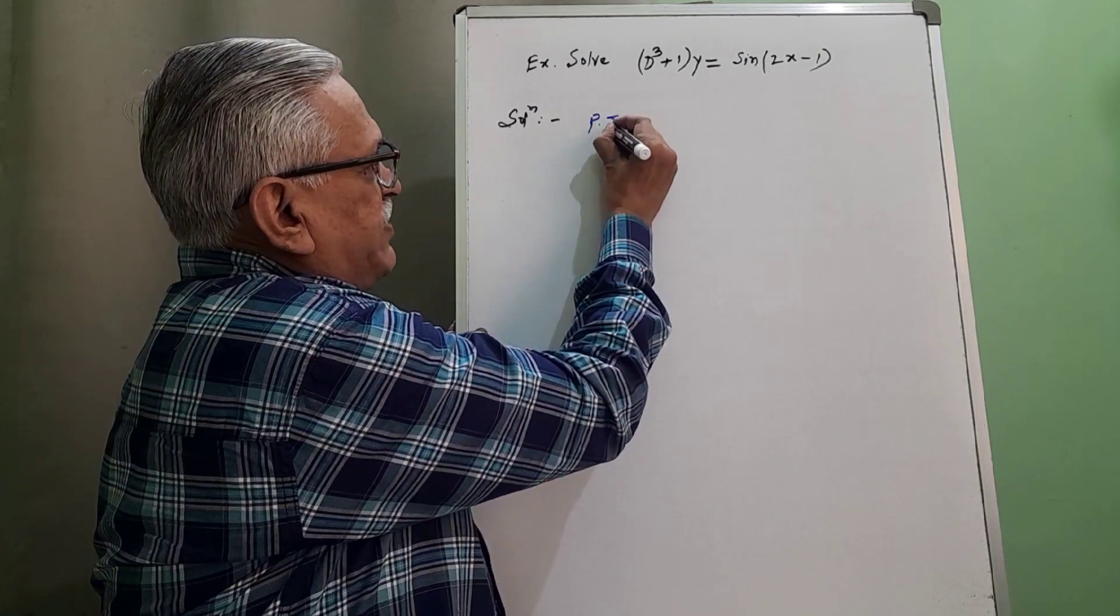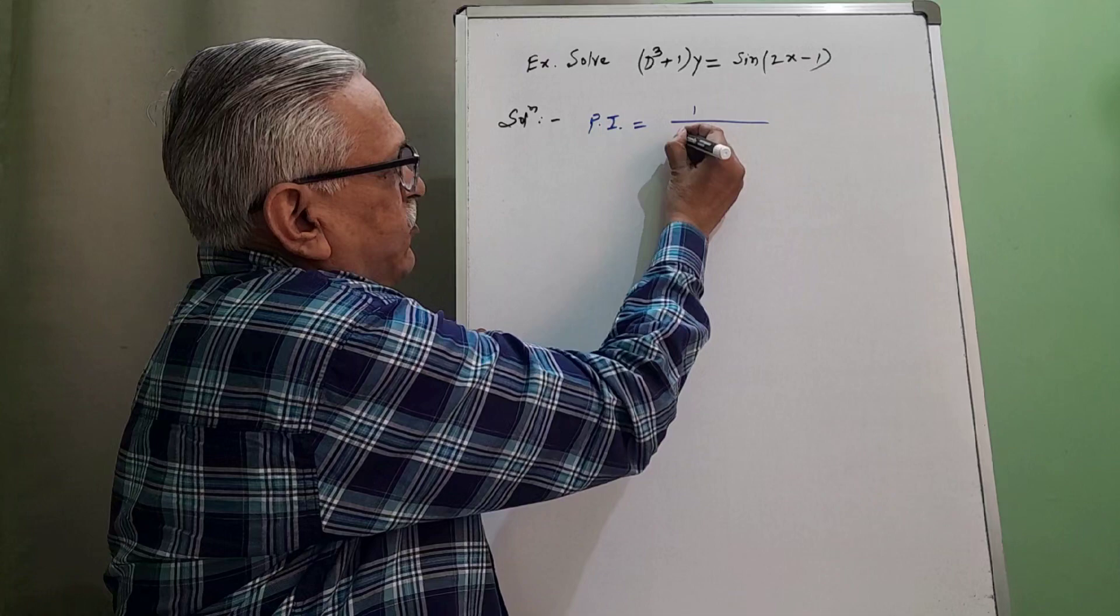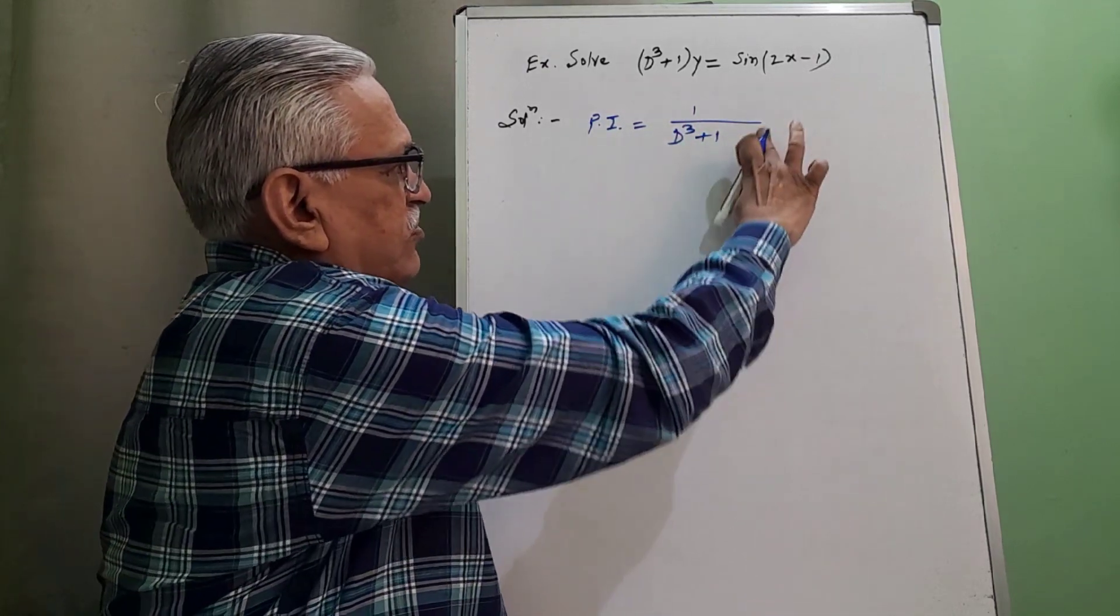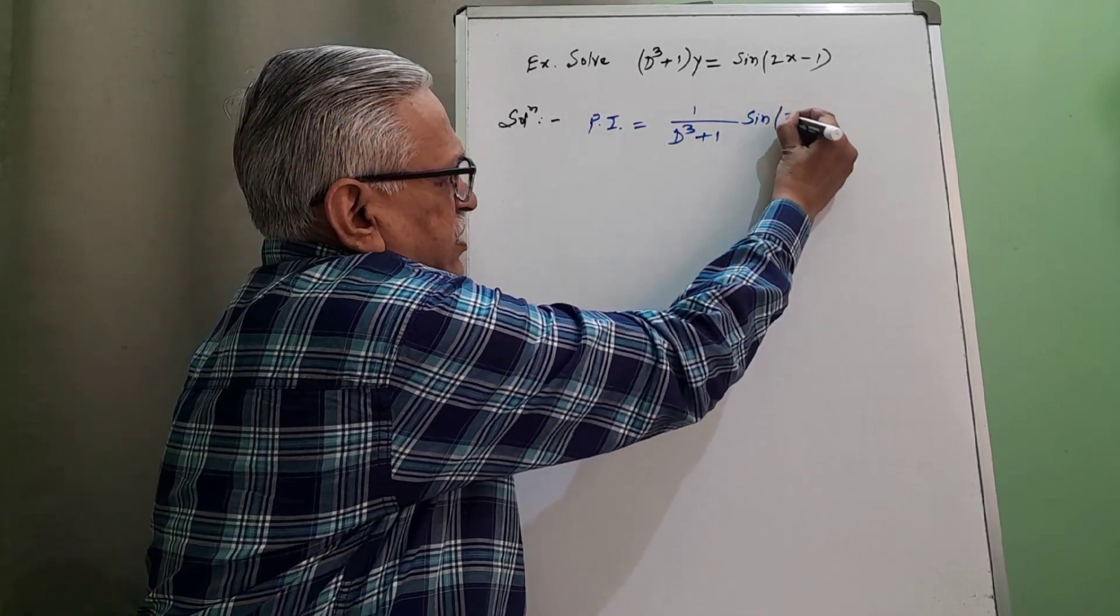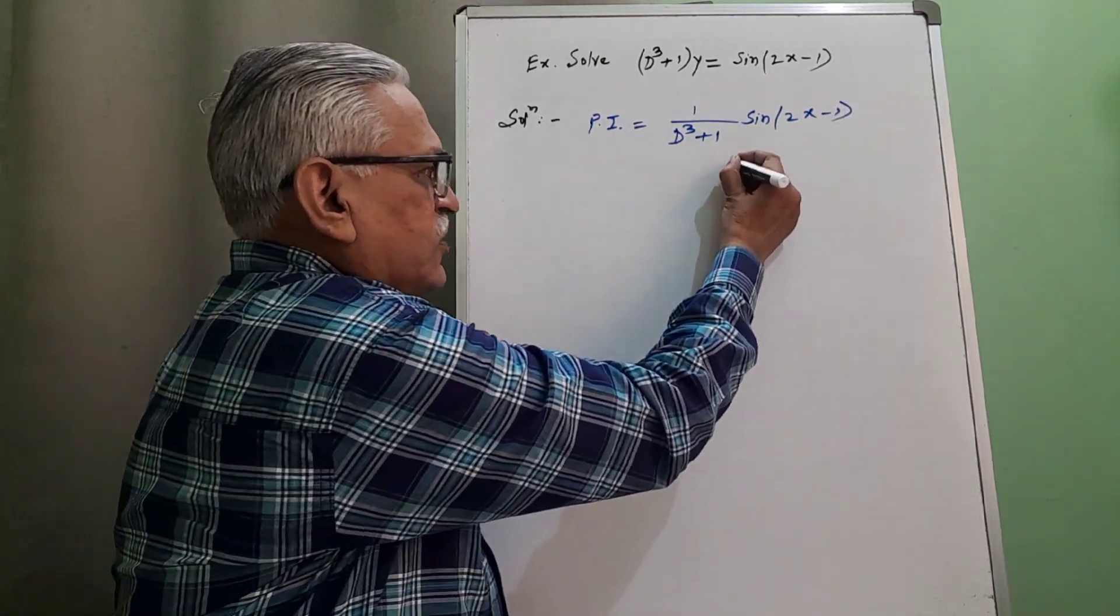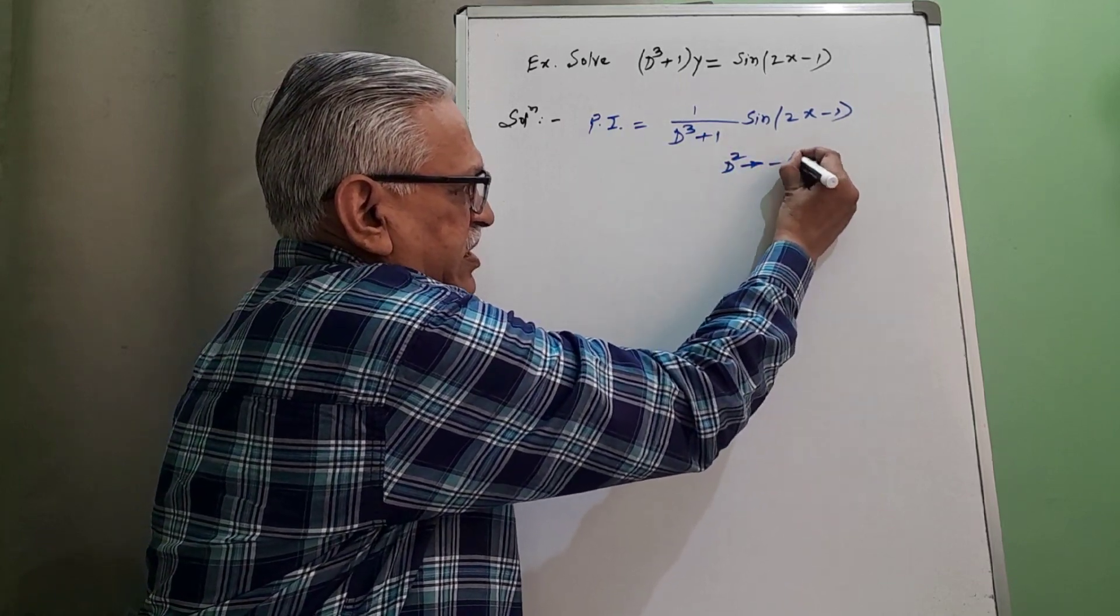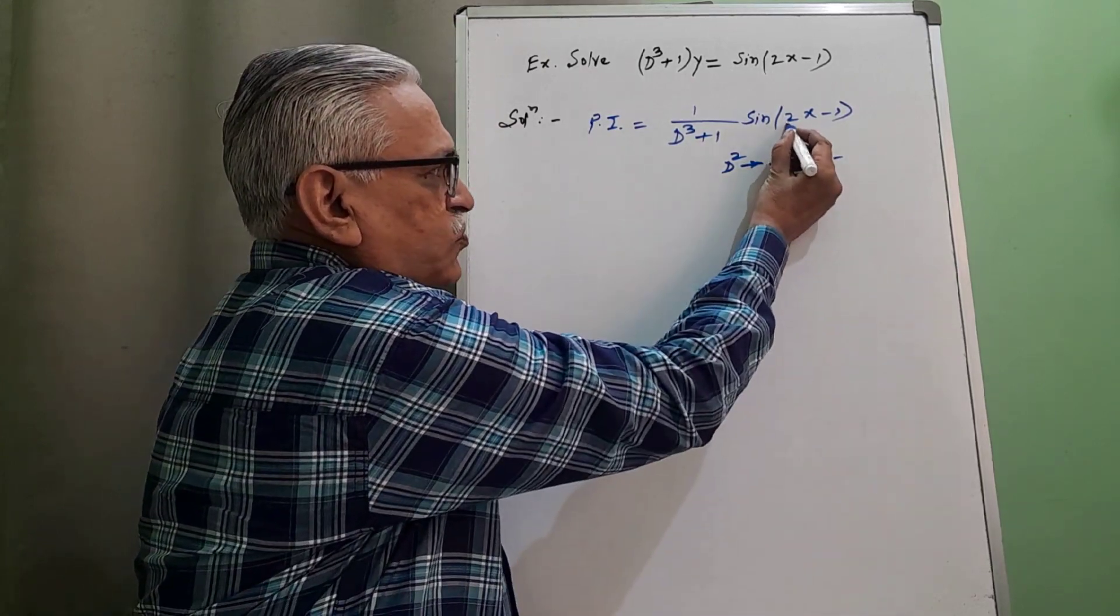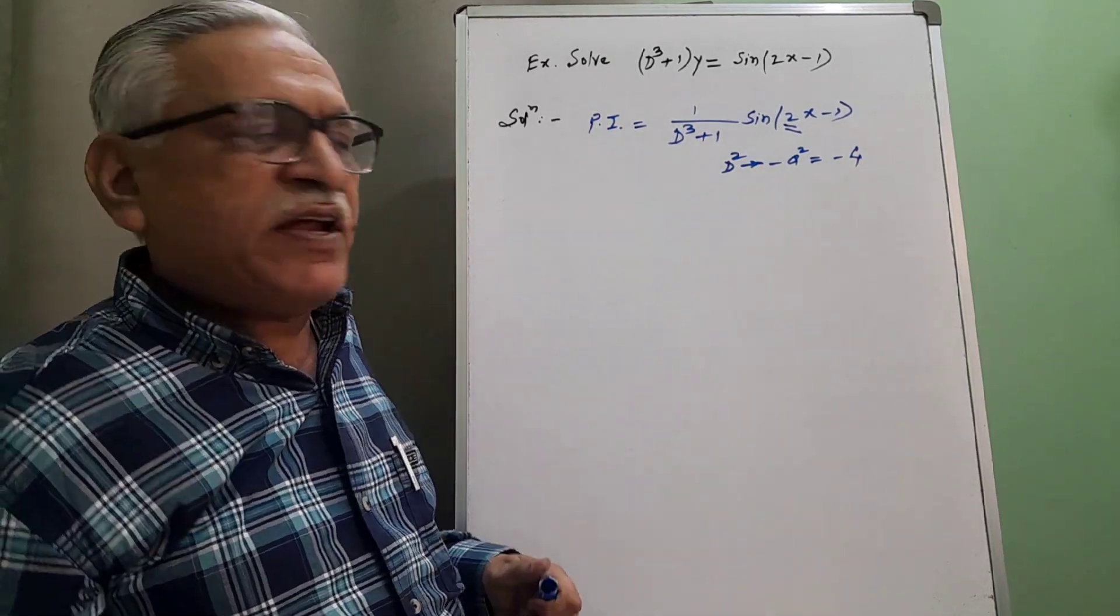We have to replace d square by a square with minus sign, this is minus a square. Here particular integral, that is PI, is obtained by again inverse operator 1 upon f(d). Here it is d cubed plus 1, which we operate on sin of 2x minus 1, sin(ax + b) type of term. The rule is d square replaced by minus a square.